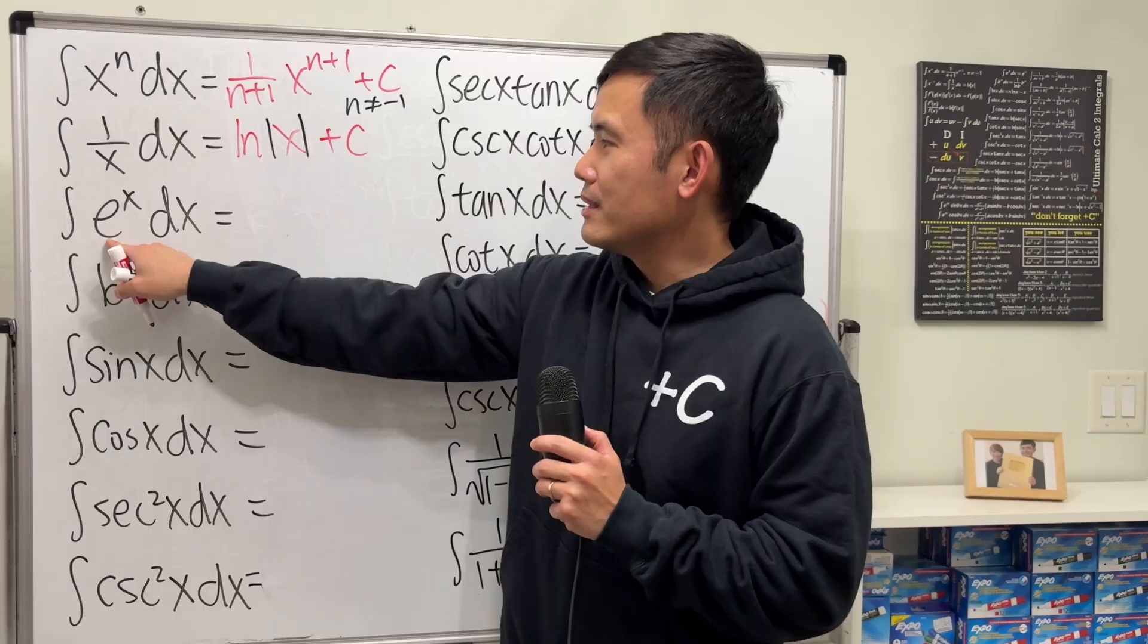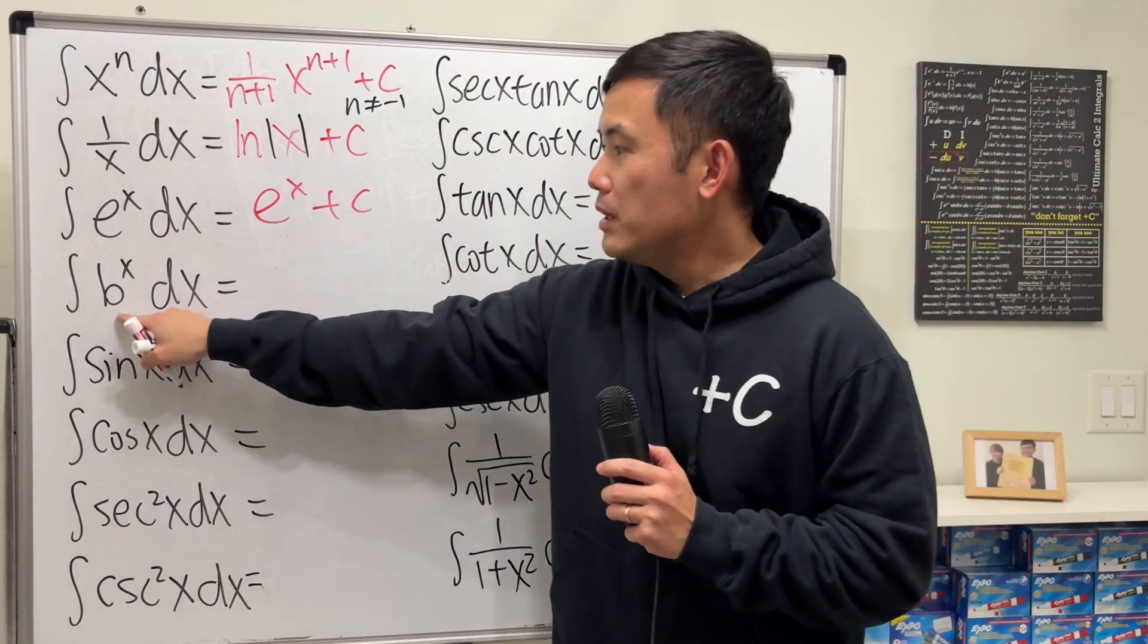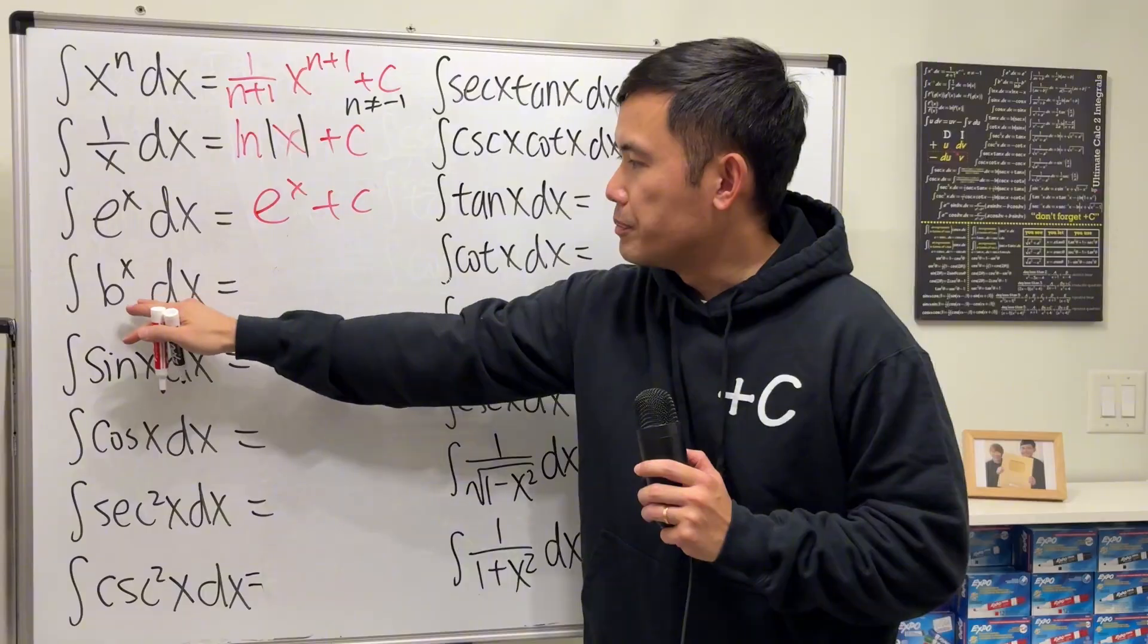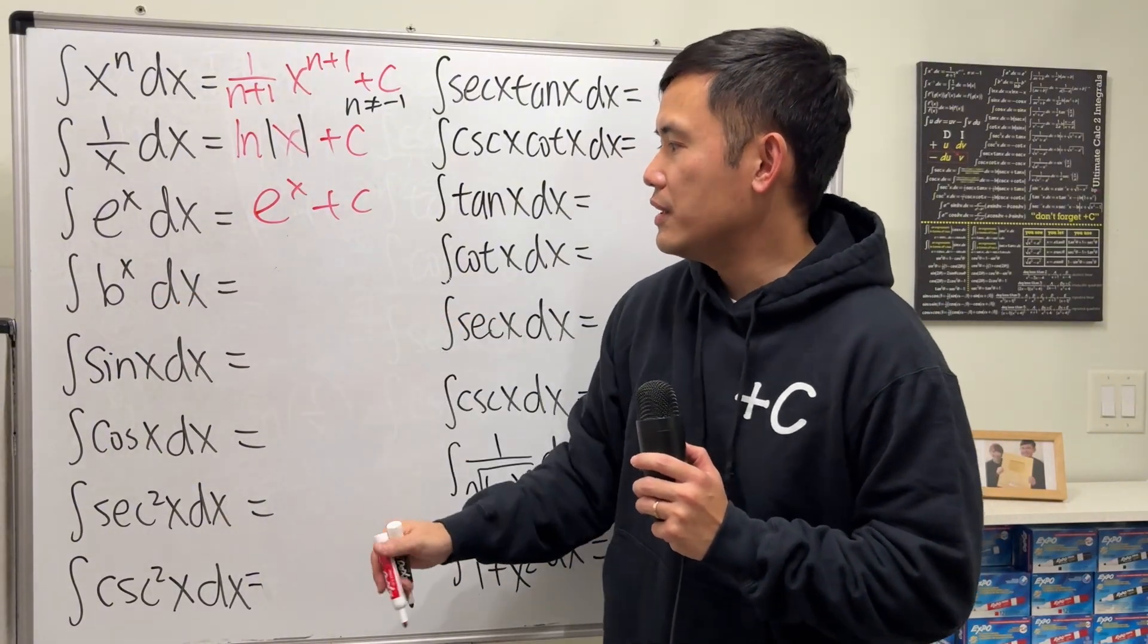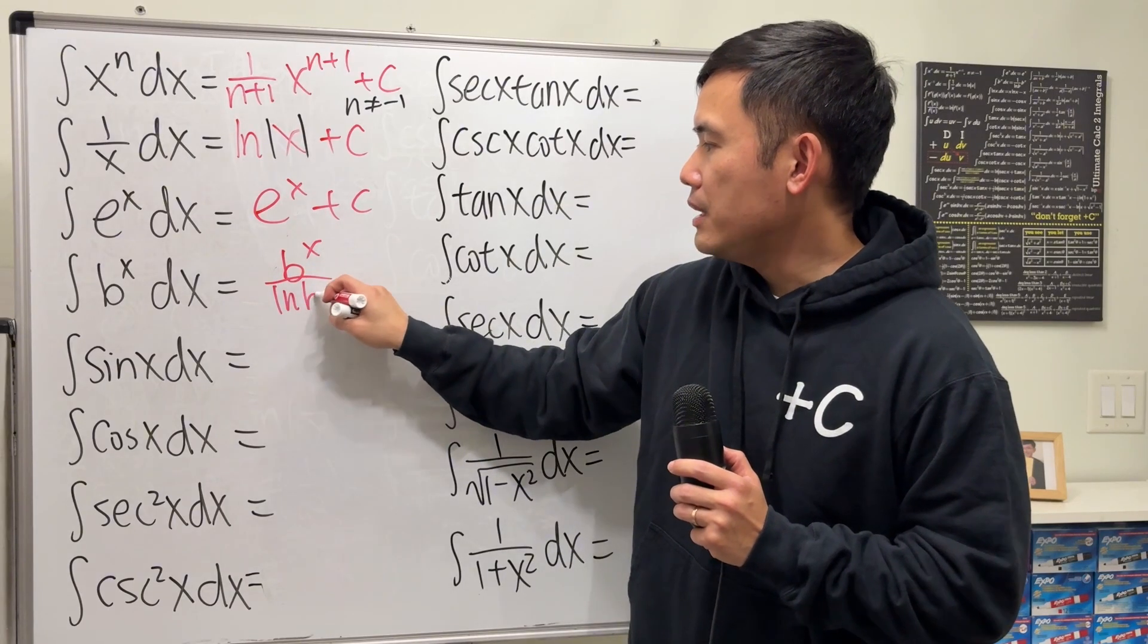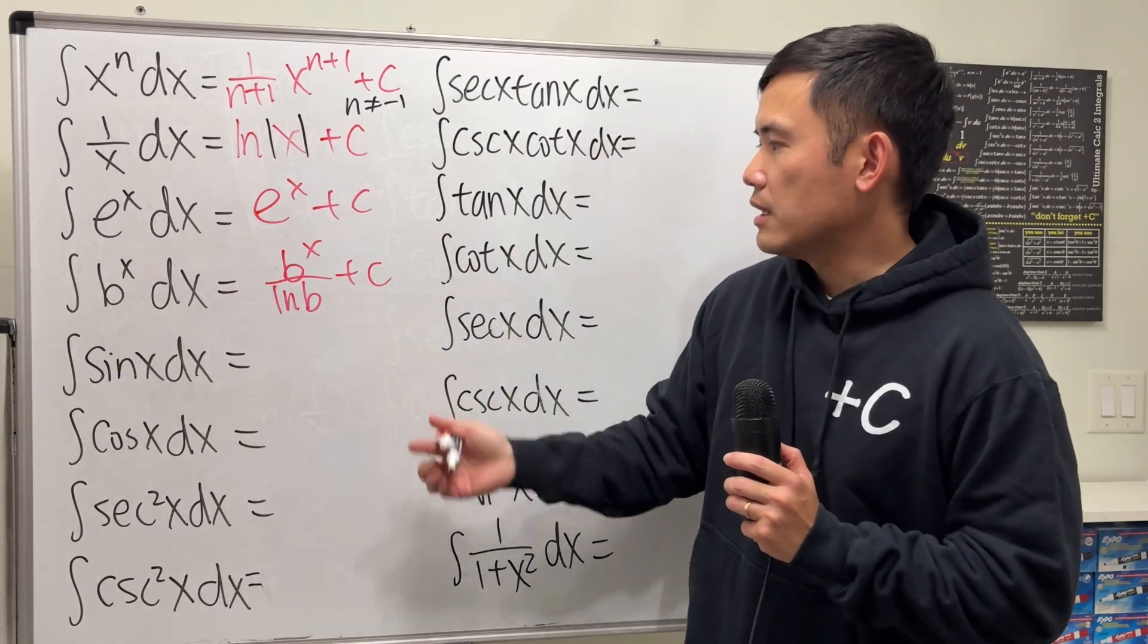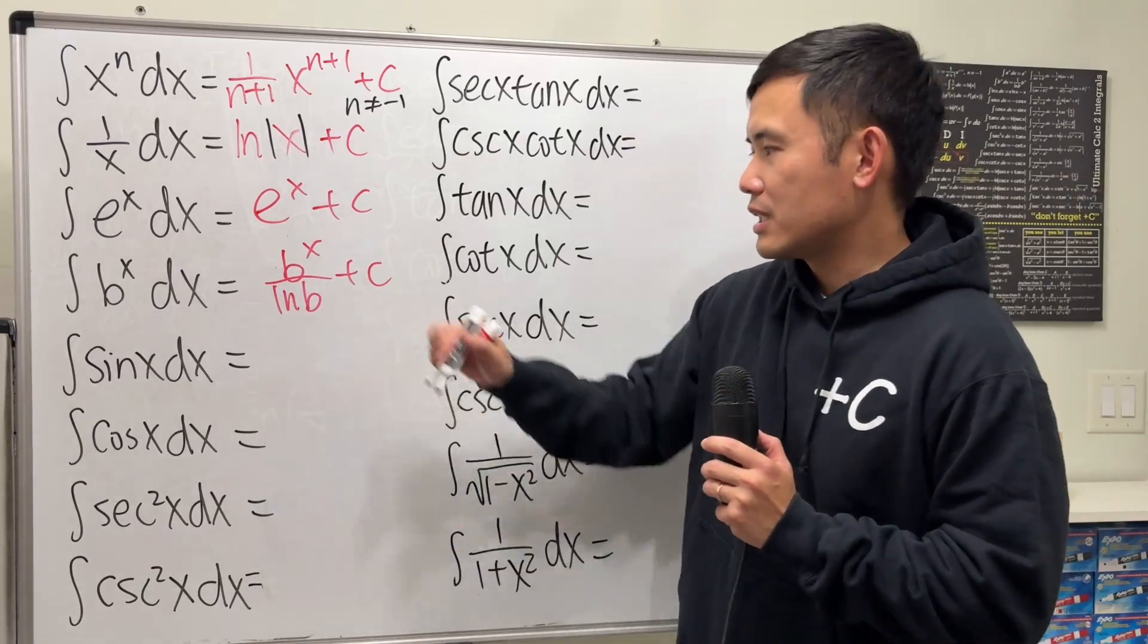How about e to the x? It's just e to the x, done. How about b to the x? That's different. If we are taking the derivative, then we just have b to the x times ln b. But here we are doing the anti-derivative. We will have b to the x but divided by ln b. And b is just a constant, ln b. Of course we have to say b is not 1, b is not negative. b can be 1 half and so on.